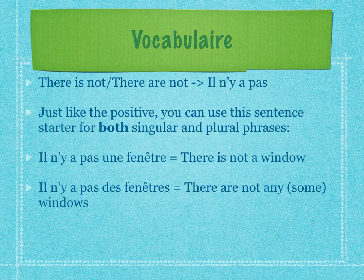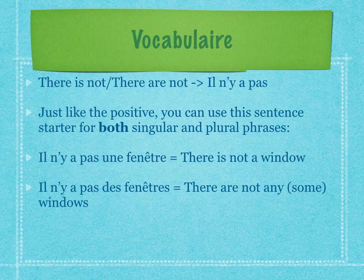Just like the positive version, you can use it for both singular and plural phrases. So if there's not a window: 'il n'y a pas une fenêtre.' Or if there are not any windows, or there are not some windows: 'il n'y a pas des fenêtres.'